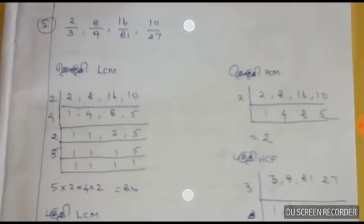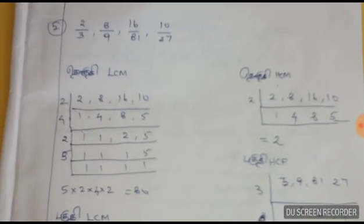Let's see the method. This is the pin method. The fractions are: 2 by 3, 8 by 9, 16 by 10. For this method, the pin — what is the pin? Number is 1, 2, 2, 1. We apply this step using LCM of the denominators.